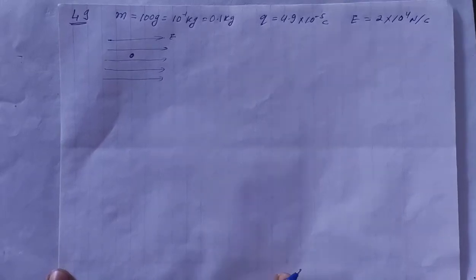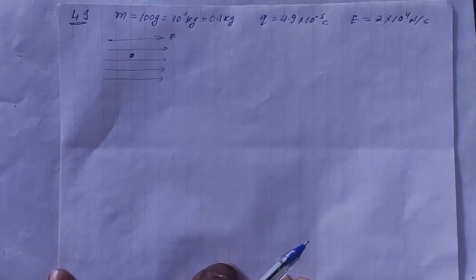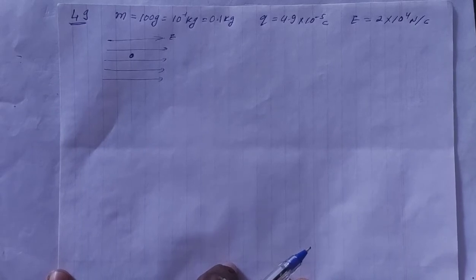H.C. Verma Solution Chapter 29 Electric Field and Potential Question No. 49. A ball of mass 100 gram having a charge 4.9 × 10^-5 is released from rest in a region where a horizontal electric field is equal to 2 × 10^4 Newton per C. Find the resultant force acting on the ball. Second question, what will be the path of the ball? Third question, where will be the ball at the end of 2 seconds?